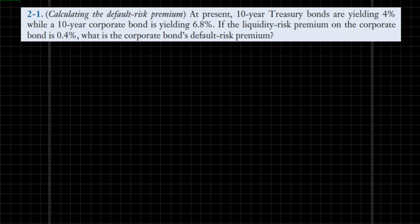Let's start by highlighting some key ingredients of the problem. We are told that a 10-year Treasury bond is currently yielding 4% nominal interest rate. At the same time, we also have information about a 10-year corporate bond which has a nominal interest rate of 6.8%. It is also given that the liquidity risk premium for that corporate bond is 0.4%. Given these facts, the question is asking for the corporate bond's default risk premium.